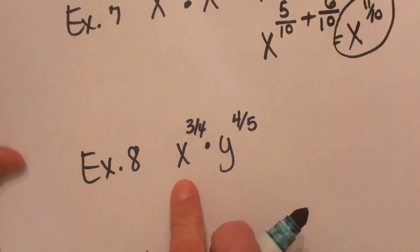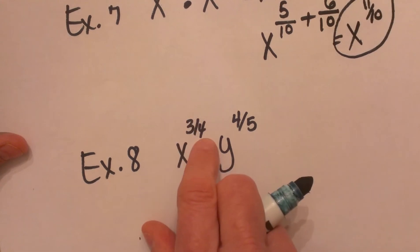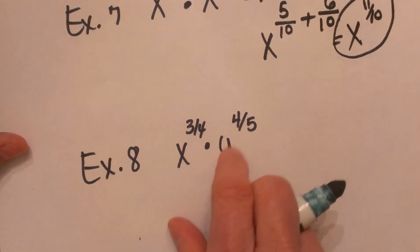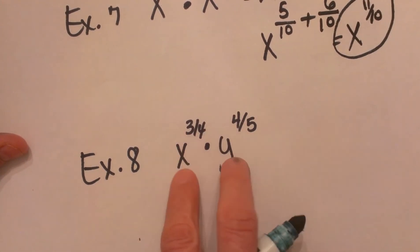Now let's look at this one. This one we have x to the 3 fourths times y to the 4 fifths. Do we have like bases? No, we don't.